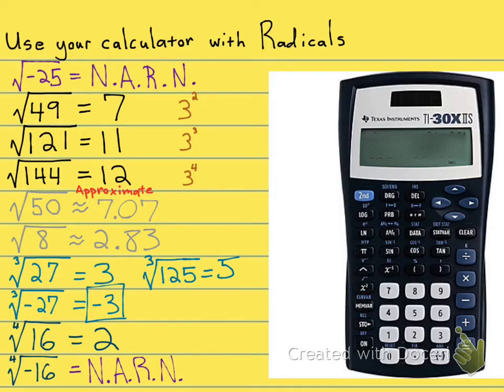So if you want to find 3 squared, you're gonna press 3 squared equals. And that's gonna give you 9. Let's see, 3 squared equals 9.